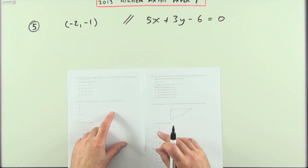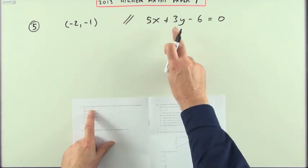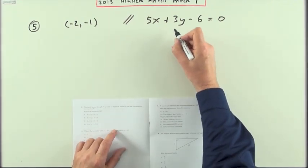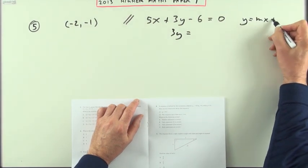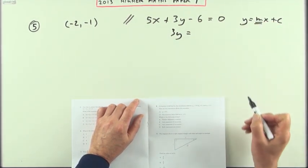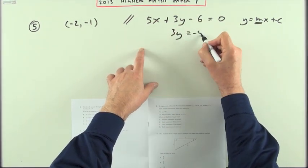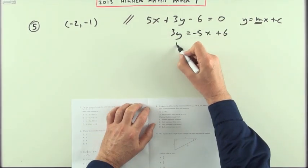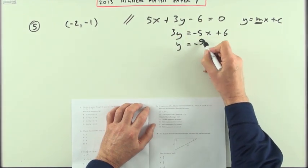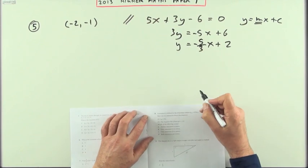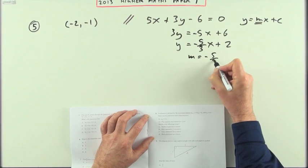Number five from the 2013 Higher Maths paper one. A line passes through this point and is parallel to this line. Well, if it's parallel I need to know the gradient. Rearrange into the form y equals mx plus c, because it's only in that form that you can spot the gradient. It's certainly not five, so 3y equals negative 5x plus 6. Divide both parts by 3, so the gradient is negative 5 upon 3.